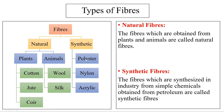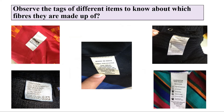The fibers which are synthesized in industry from simple chemicals obtained from petroleum are called synthetic fibers — for example, polyester, nylon, acrylic, etc. If you want to know about different fibers, try observing the tags of different items at your house. You will notice that some are made of 100% cotton, some of 100% polyester, some of acrylic, or some of wool.